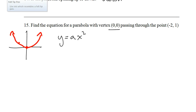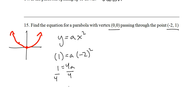And then we just need to put in y equals 1 and x equals negative 2 from the point we've been given. And we end up with 1 equals 4a, over 4, a equals a quarter. So the equation of this parabola we've drawn on the left will be y equals 1 quarter x squared.